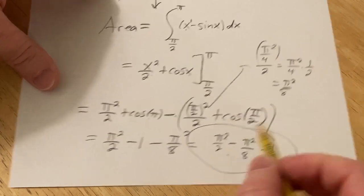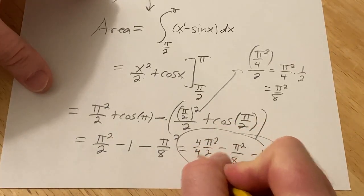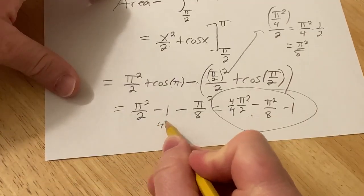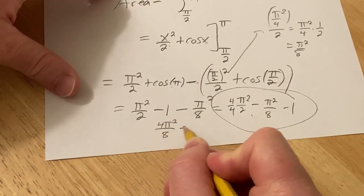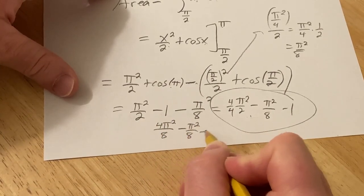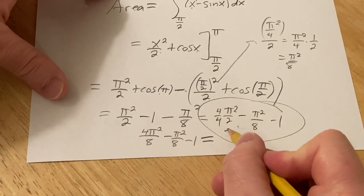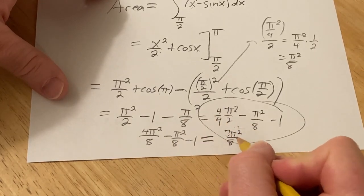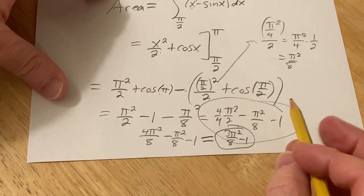If you wanted to combine these, you basically multiply this by 4 over 4. So it'd be 4 pi squared over 8 minus pi squared over 8 minus 1. That'd be 3 pi squared over 8 minus 1. That would be the area of the region.